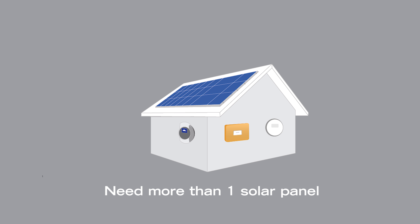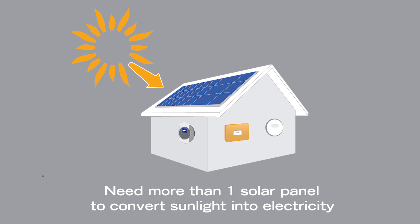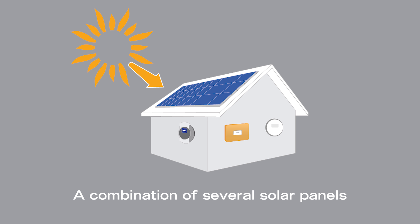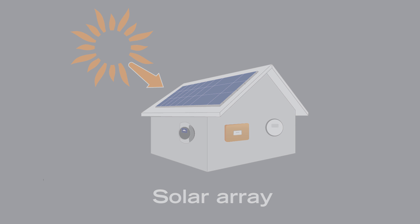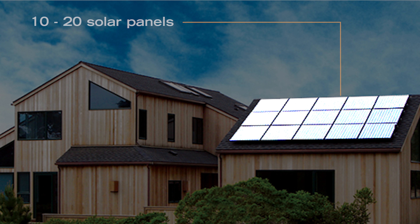40 PV cells in one solar panel is not enough to power your home. You will need more than one solar panel on your roof in order to convert the right amount of sunlight to electricity. A combination of several solar panels is referred to as a solar array.